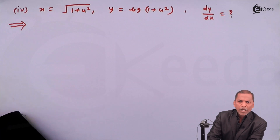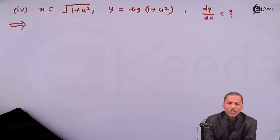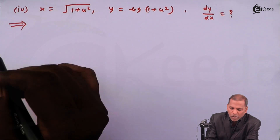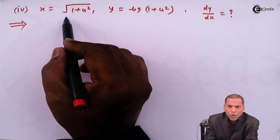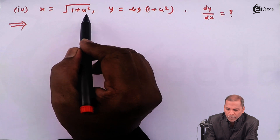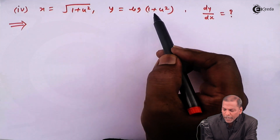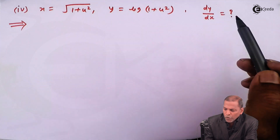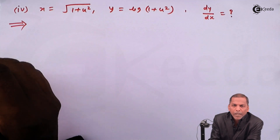Hello friends, now we see problem 1 sub-question 4, which is based on the theorem of parametric functions from the chapter on differentiation. The sub-question 4 is: x is equal to under root of 1 plus u squared, and y is equal to log in bracket 1 plus u squared. For this question, we have to find dy by dx. Now let's see the solution.